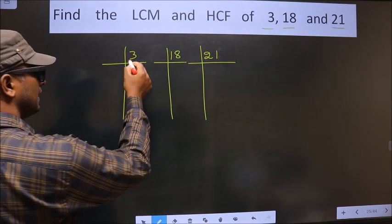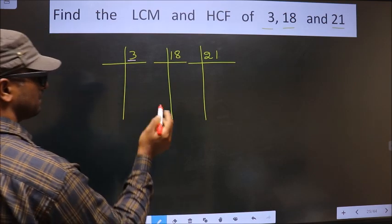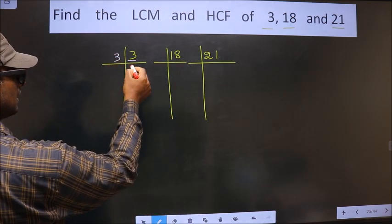Now here we have 3. 3 is a prime number. So we take 3 once.